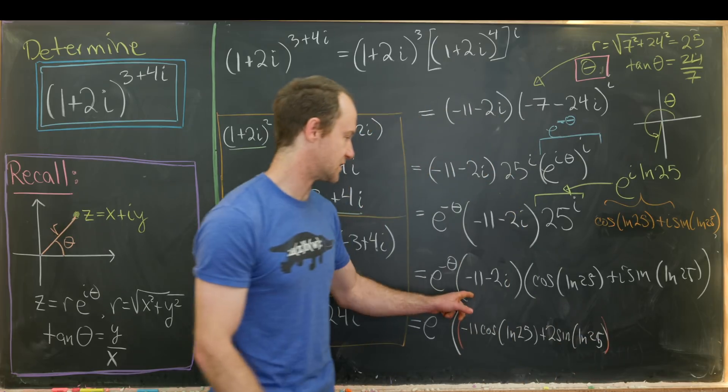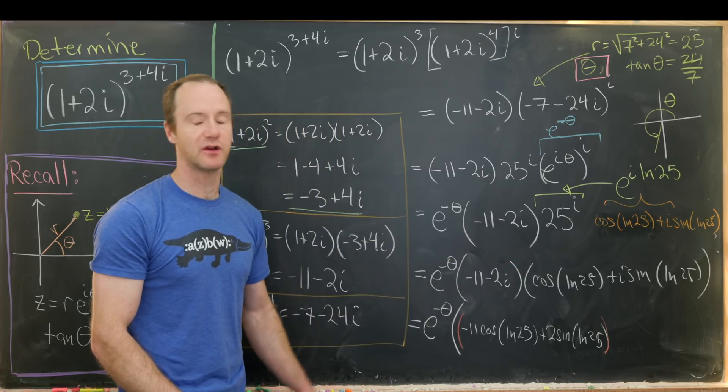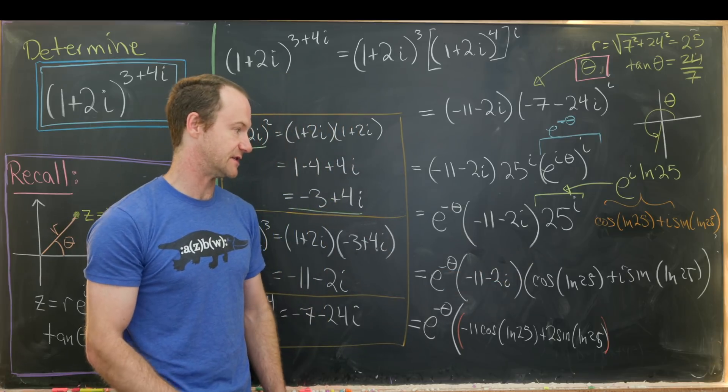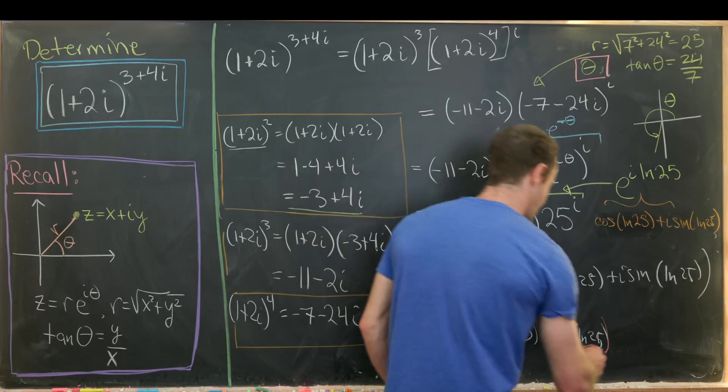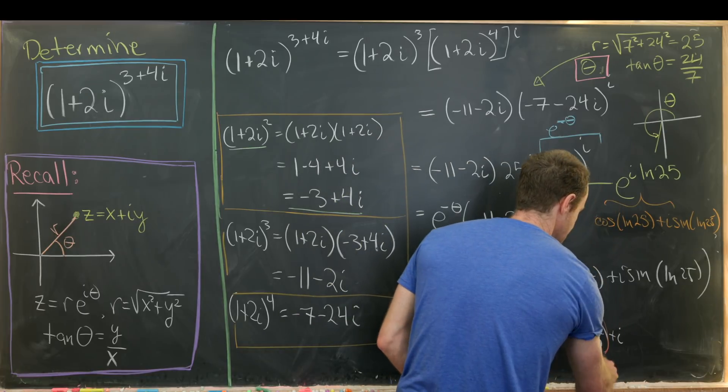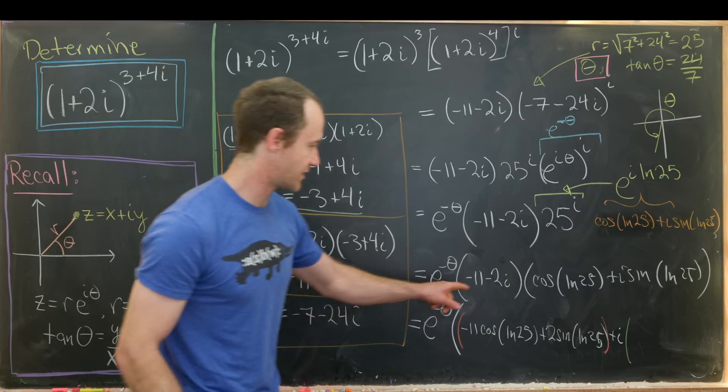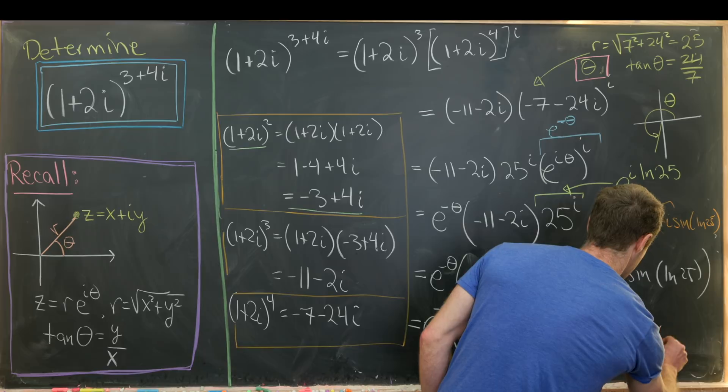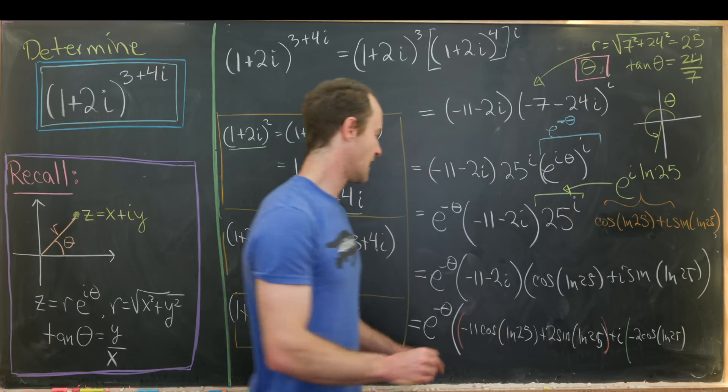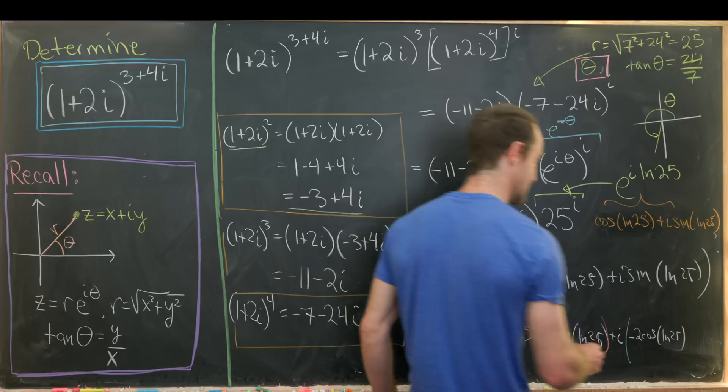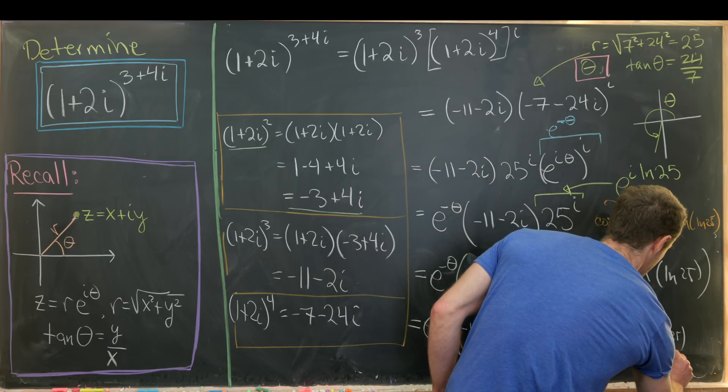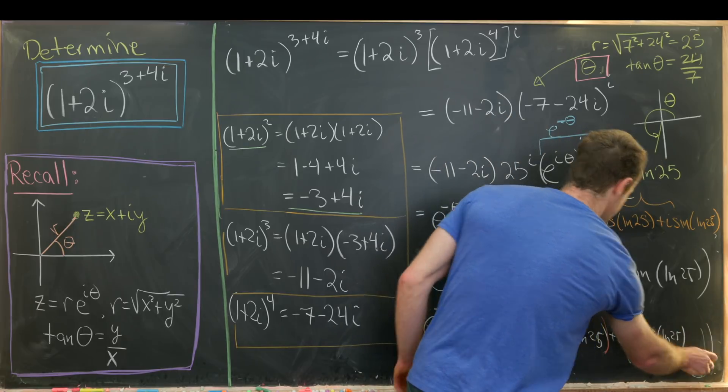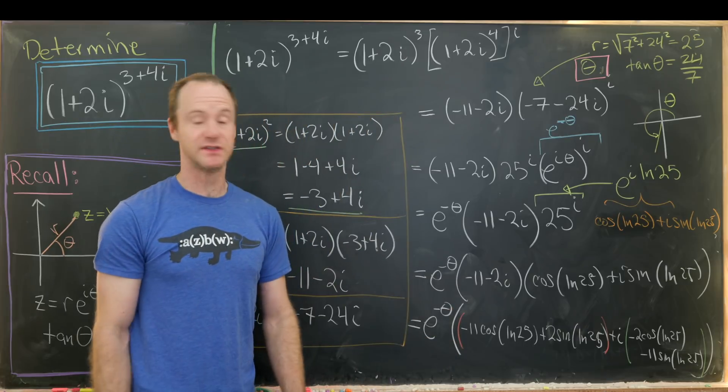I get that from multiplying the two real parts as well as the two imaginary parts, keeping in mind that i times i is negative 1. So negative 2i times i is positive 2. And then for my imaginary part, I have plus i times, let's see what we're left with. We'll have a minus 2 times the cosine of the natural log of 25. And then a minus 11 times the sine of the natural log of 25. Great. And I think that's probably about as simple as you can make this.